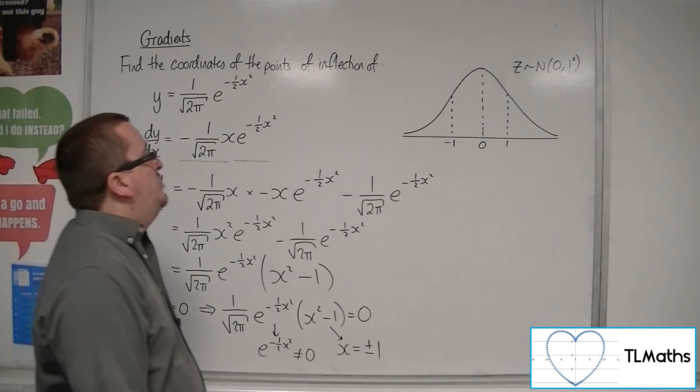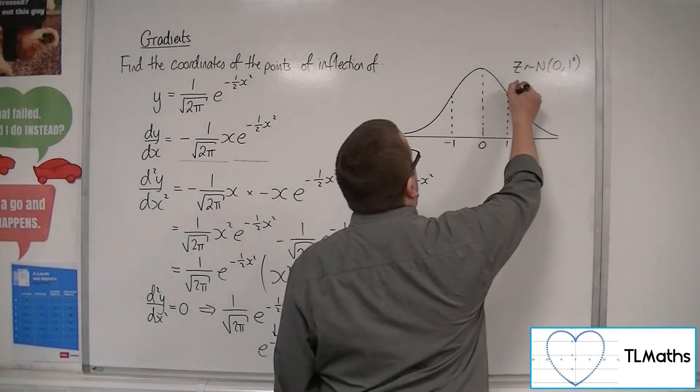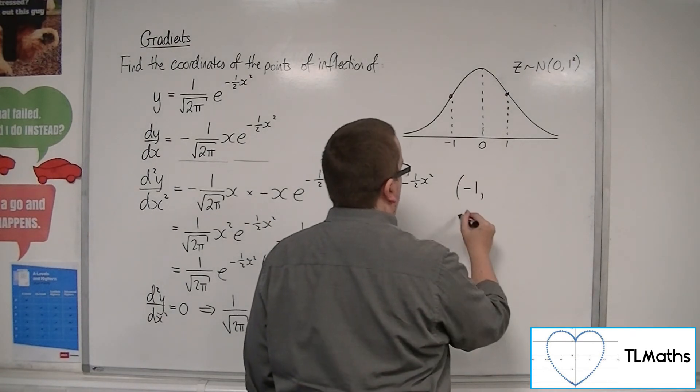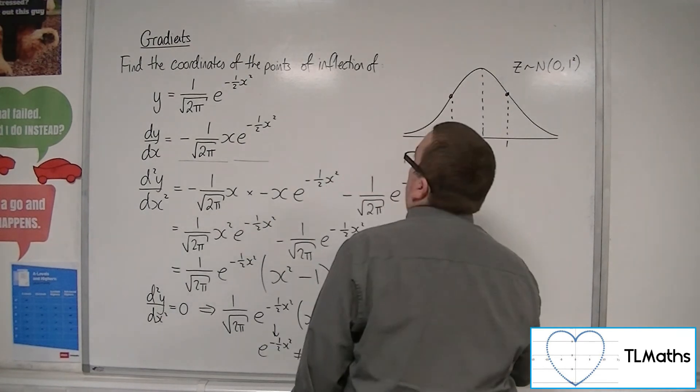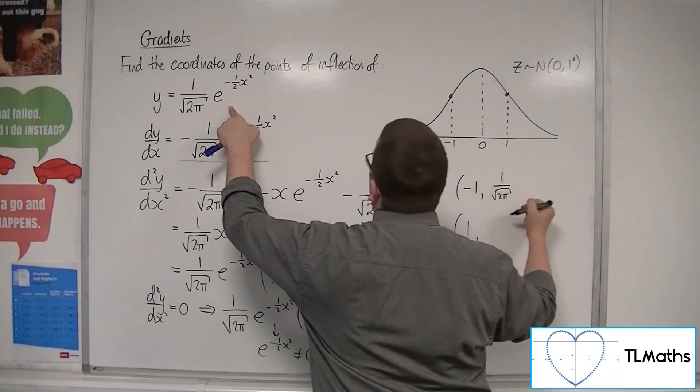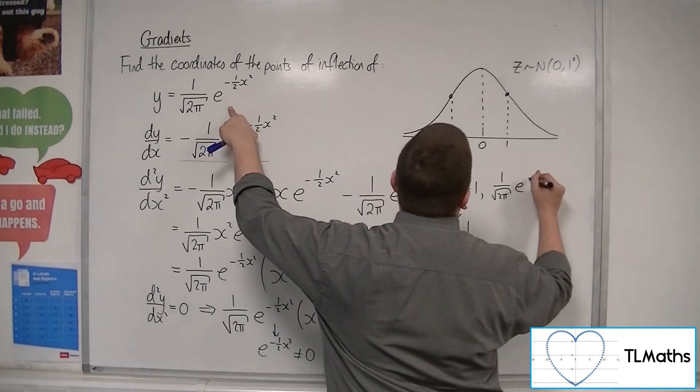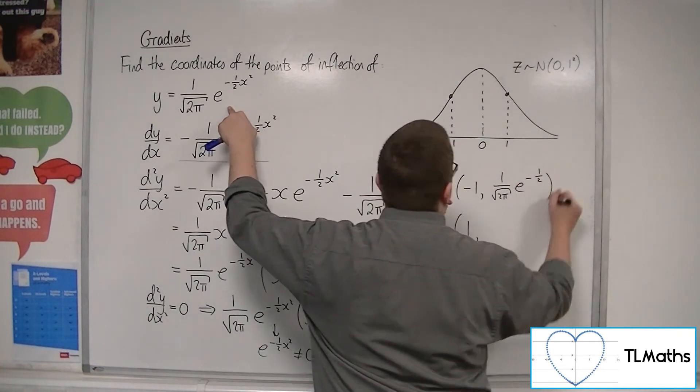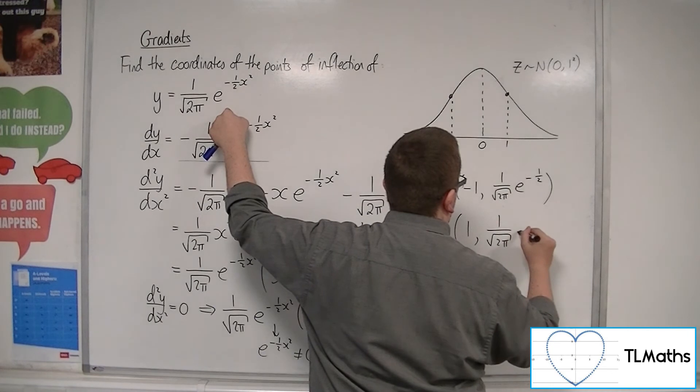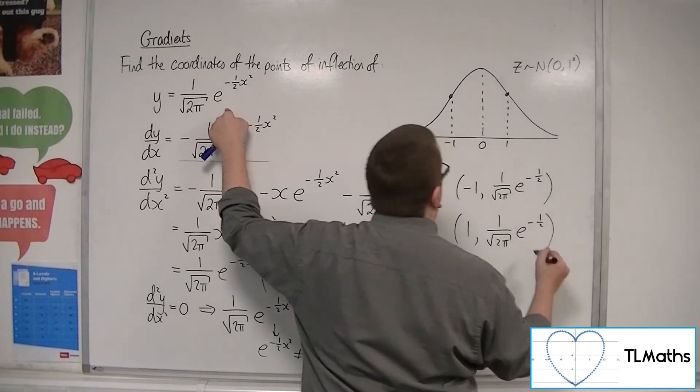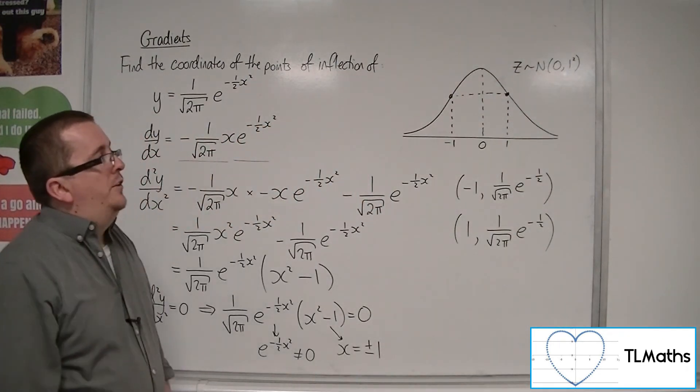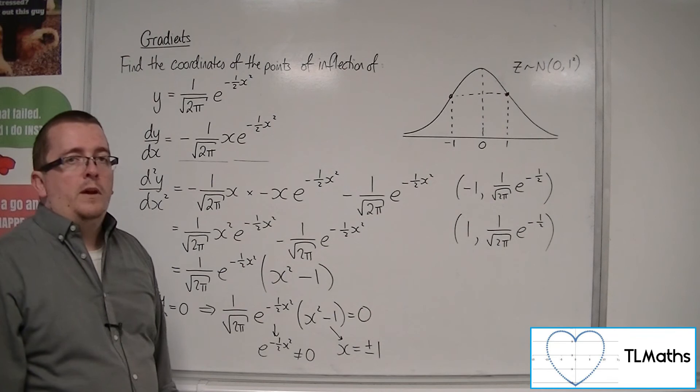In actual fact, these turning points are happening at 1 and -1. Now, we could substitute in to find the y coordinates if we wanted to. So we've got -1 and 1. Now, if we substitute in -1 into this, we're going to get 1 over root 2π e^(-1/2). And we're going to get exactly the same when we substitute in 1, which is probably what we expect because we expect the graph is symmetric, and so those two points must be the same height.